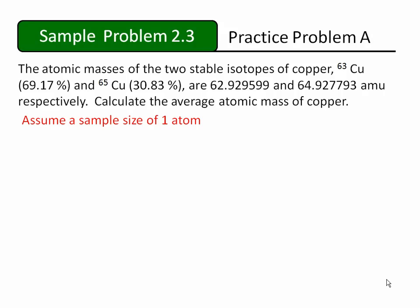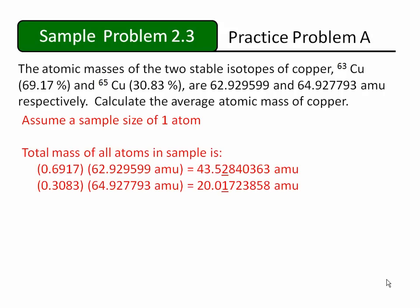We can now find the total mass of all of the parts in this artificially small sample. We'll need to multiply the number of parts by the actual mass of each part. Another way to say this is that we have to multiply the percent, as a decimal, times the precise mass of each isotope.